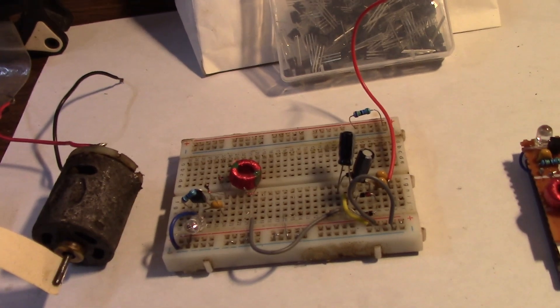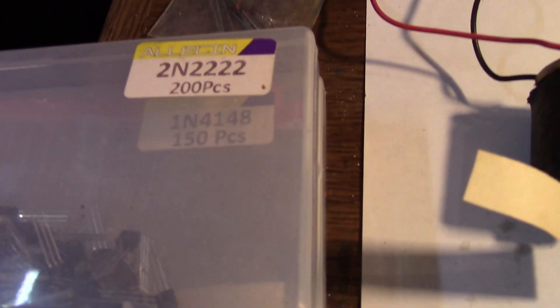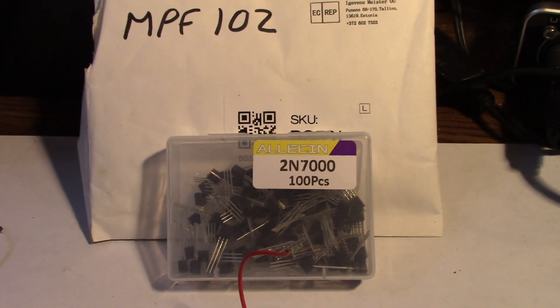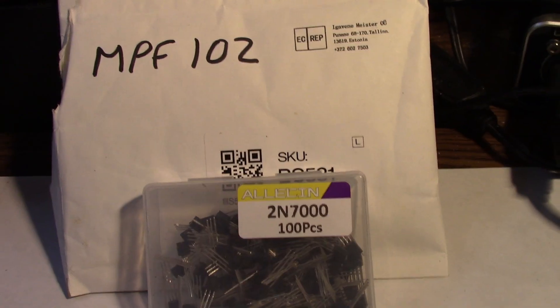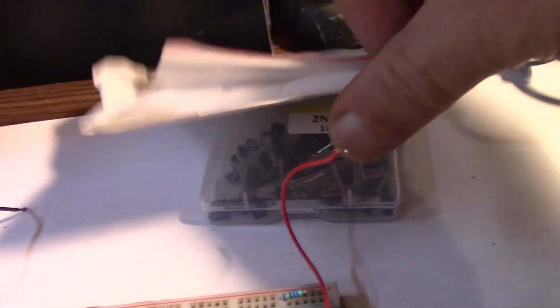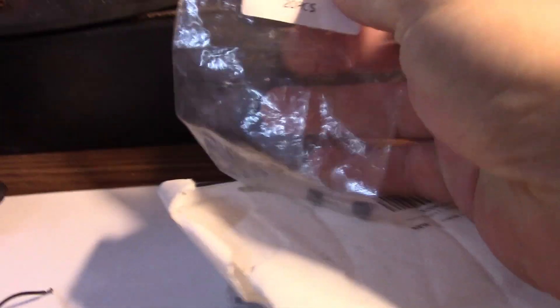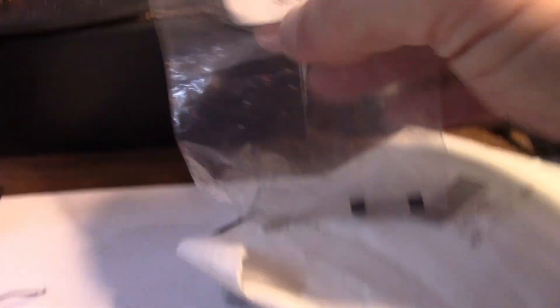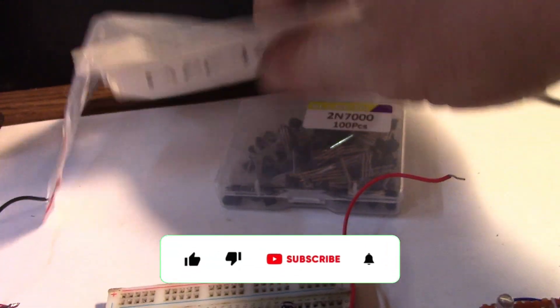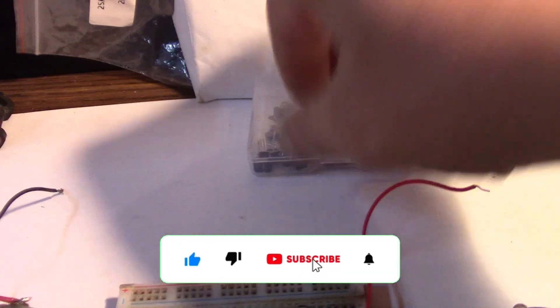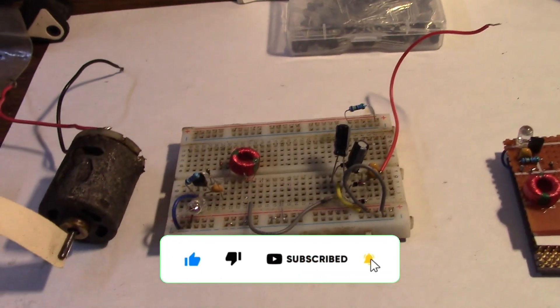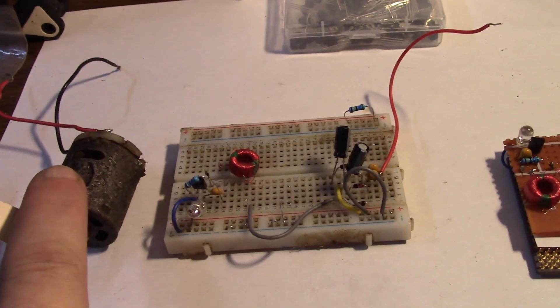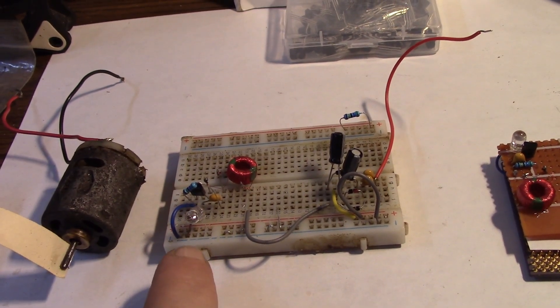And the same with the 2N2222s, people have likely got those, more than they've got, say, 2N7000 FETs, or MPF102 JFETs, or indeed the other type here which I've been using, the best ones for low voltage running, the K117s. So I've been trying to get it such that anybody can make one of these.